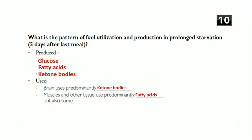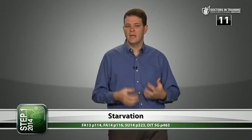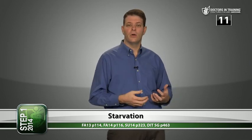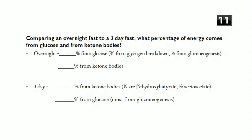Some tissues, like red blood cells, still need some glucose. Question eleven: comparing an overnight fast to a three-day fast, what percentage of energy comes from glucose and ketone bodies? After an overnight fast, 90% comes from glucose — primarily from mobilizing glycogen stores — and only about 5% from ketone bodies. After a three-day fast, 60% comes from ketone bodies and only 40% from glucose, primarily from gluconeogenesis.